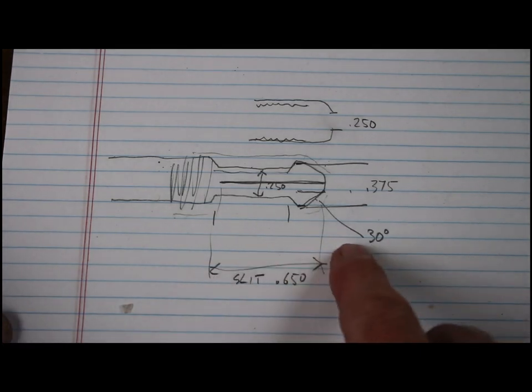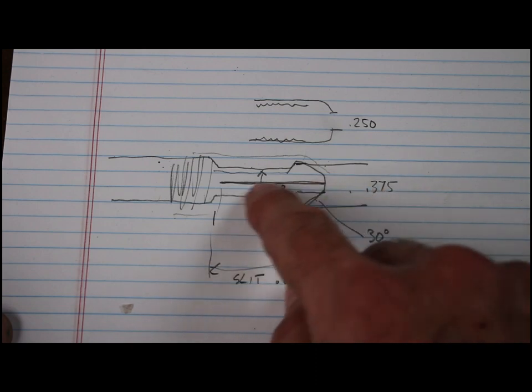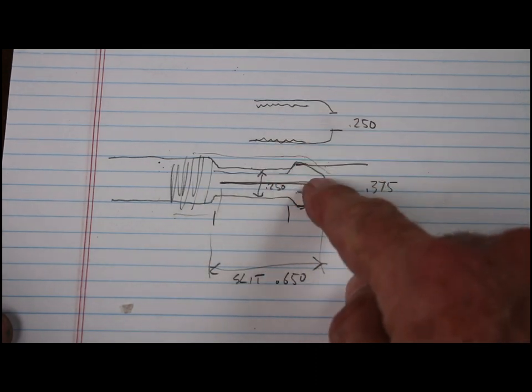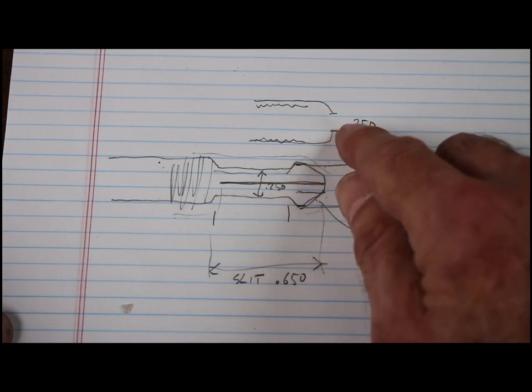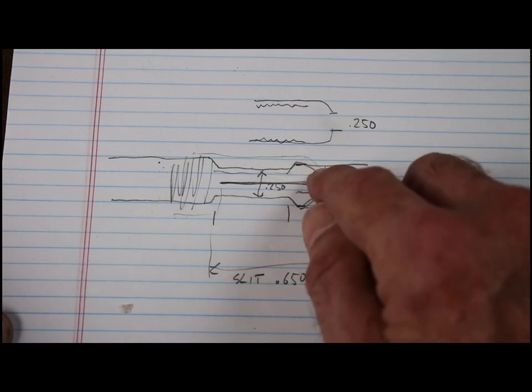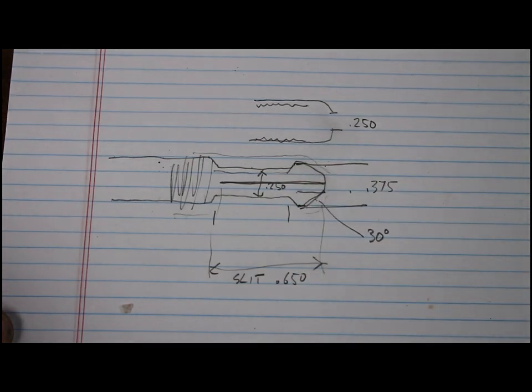So basic critical dimensions like how deep the slit has to be for the X-Acto blade and tapers. This taper matches an internal taper that I don't show here that matches the drill that I use, a centering drill, because it has a 30 degree taper. So let's jump right in. I'll give you a quick overview of how I made this.